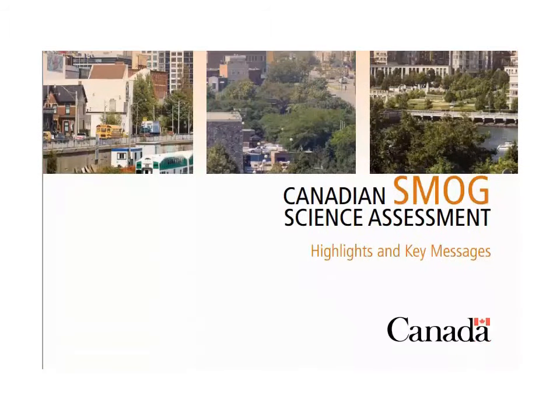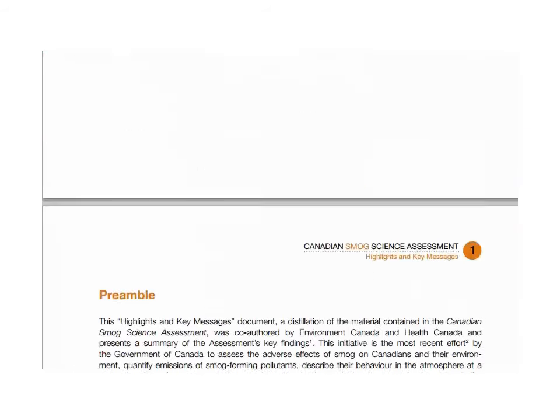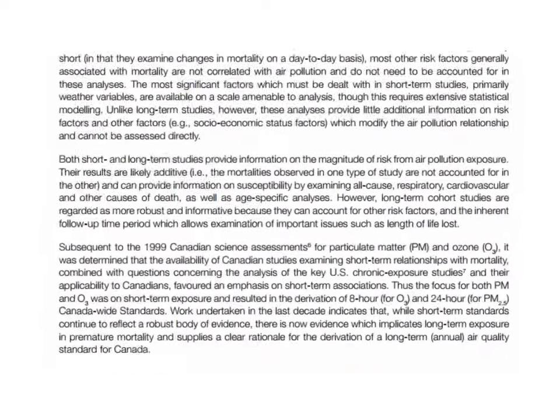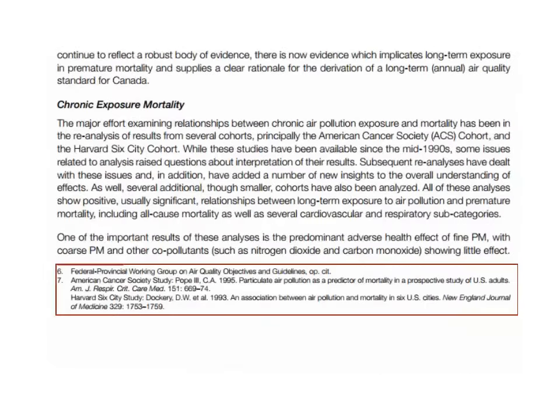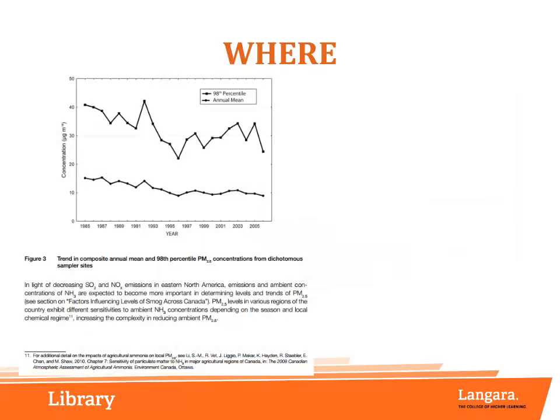As we start to read the report, we should be looking for hints about where the information in this report is coming from. At first glance, we can already see a few citations. Generally, reliable sources will use citations to indicate where they got their information and who they are interacting with. This gives credit to the author of the original source and allows readers to find the information for themselves — the same reason why it is so important to cite the sources that you use in your own research assignments.